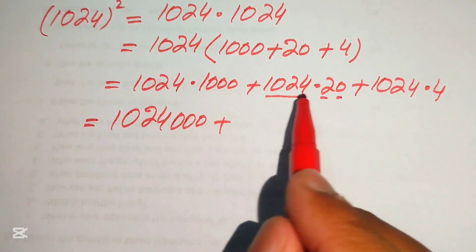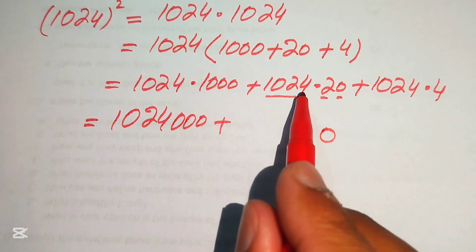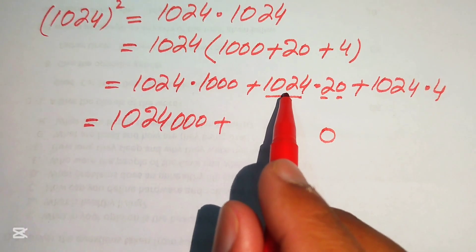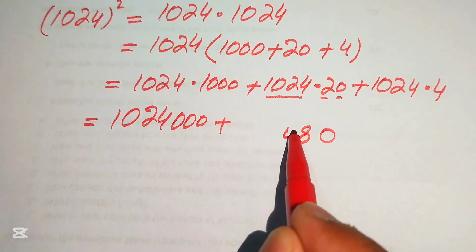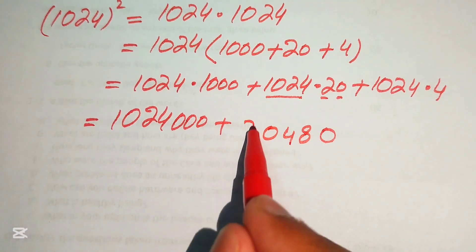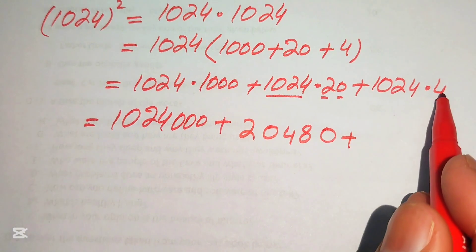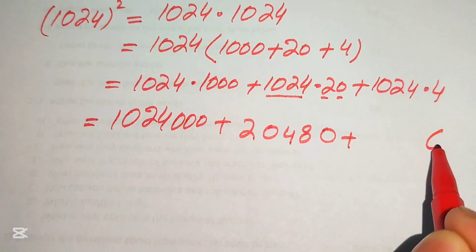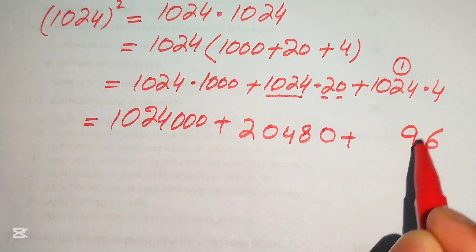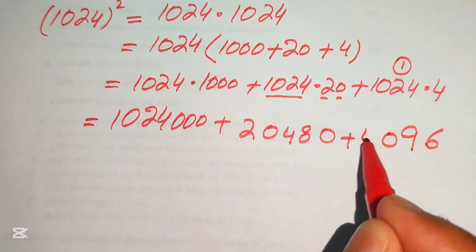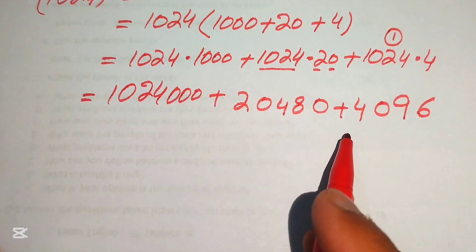To multiply 1024 by 20, we treat this as a two-digit number. Multiplying by the zero digit gives zero. Then multiplying by 2: 2 fours are 8, 2 twos are 4, 2 zeros are 0, 2 ones are 2, giving 2048. For the 4 multiplication: 4 fours are 16 — write 6 carry 1; 4 twos are 8 plus 1 is 9; 4 zeros are 0; 4 ones are 4, giving 4096.